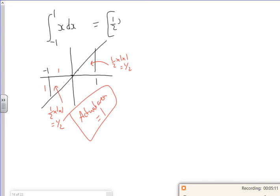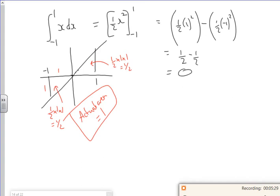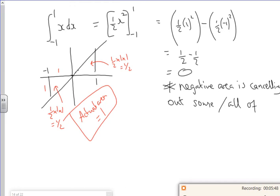This is the issue about being really careful. If I integrate it, it's a half x² between minus one and one. If I put my limits in, it's a half of one squared minus a half of minus one squared. That gives me a half minus a half, it gives me zero. Now what's happening is the negative area and the positive area is canceling out some or all of the positive area, which is not ideal.